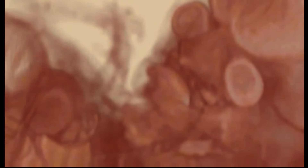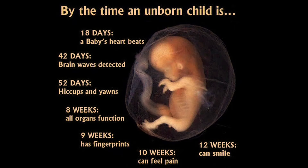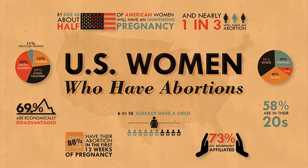Sadly, half of all abortions occur after this point in time. People are often convinced by abortion advocates that it's just a mass of cells, but you're talking about a fully functioning baby at this point. By the ninth week, the baby has fingerprints. At 10 weeks they're pain-capable, and they've been seen to smile at 12 weeks. Abortion today is the number one cause of death worldwide.